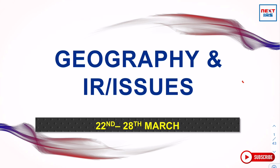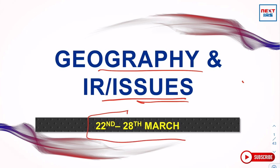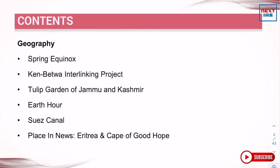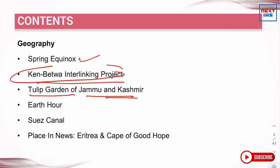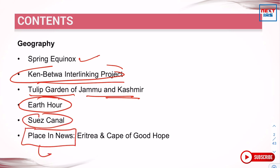Hello, dear students. Today we will discuss important topics from geography and IR sections during the period of 22nd to 28th March. In the geography section we have Spring Equinox, Ken-Betwa Interlinking Project, Tulip Gardens of Jammu and Kashmir, Earth Hour, Suez Canal, and a new item — places in news, which is very important from the prelims perspective. Here we have Eritrea and Cape of Good Hope in places in news.